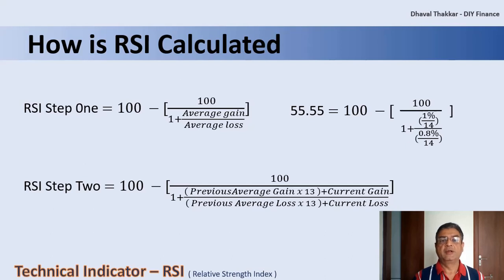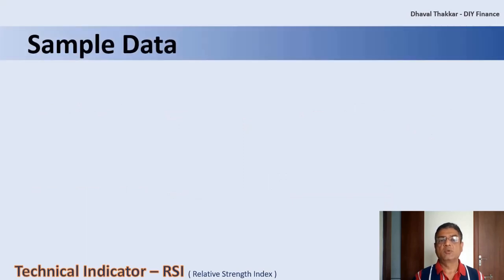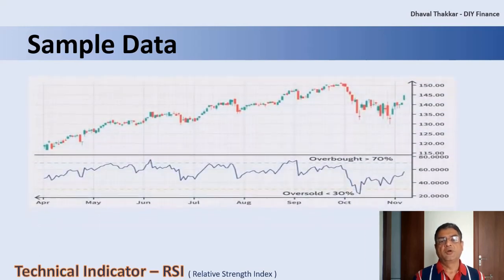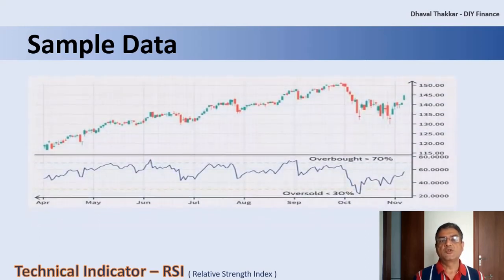After the RSI is calculated, the RSI indicator can be plotted beneath an asset's price chart. The RSI will rise as the number and size of up days increases and fall as the number and size of down days decreases. This may seem like a complicated mathematical calculation, but most sites with historical data of investment instruments will also have an option of plotting the RSI value — the RSI graph is generally plotted below the investment instrument price chart, as shown in this example.